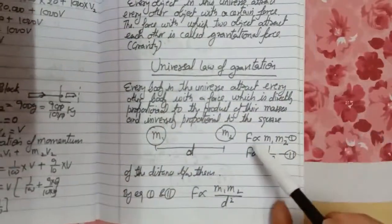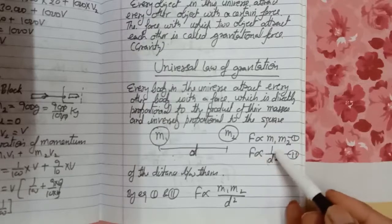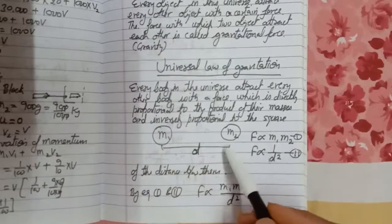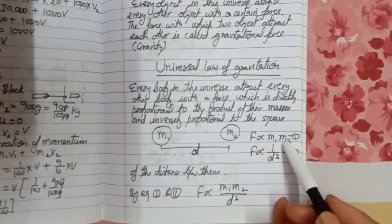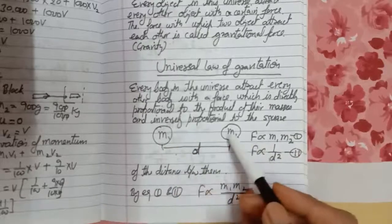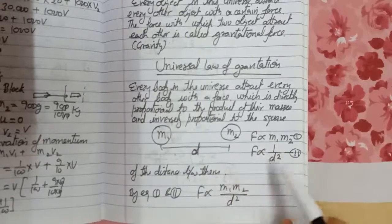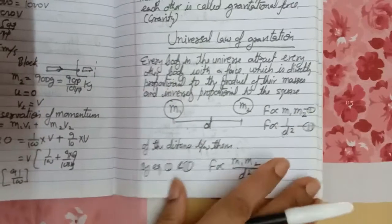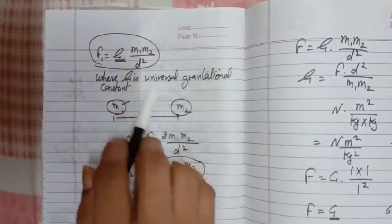So first it depends on the product of the masses, and second, it is inversely proportional to the square of the distance between them. If two objects having masses M1 and M2 are placed at a distance D, then according to the universal law of gravitation, F is directly proportional to M1 times M2, and inversely proportional to D squared. Combining these two, we get F directly proportional to M1 M2 upon D squared. By removing the proportionality sign, we get a constant G. G is called the universal gravitational constant.